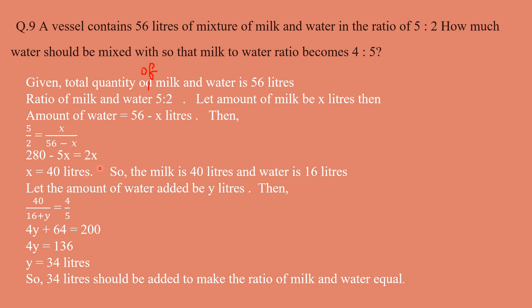So milk is 40 liters and water is 56 − 40 = 16 liters. Now let y liters of water be added. Milk remains 40 liters; new water is 16 + y. The new ratio is 4:5, so: 40 / (16 + y) = 4/5. Solving gives y = 34 liters. Therefore, 34 liters of water should be added to make the milk-to-water ratio 4:5.